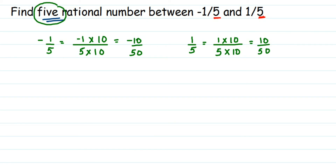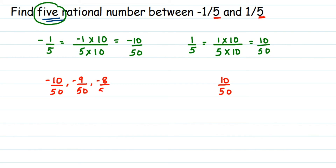Now you can see that between -10/50 and 10/50, we have several numbers. We can pick any five rational numbers from them. Between -10/50 and 10/50, we have -9/50, -8/50, and so on, up to 0/50 (which is 0), and then so on up to 9/50. We have this many rational numbers to choose from.